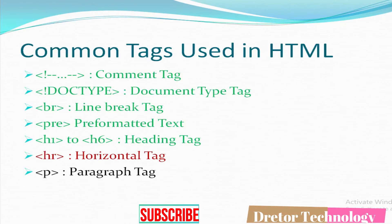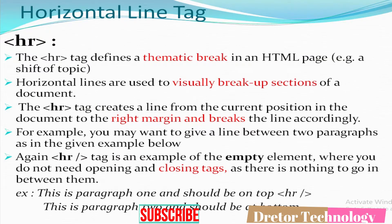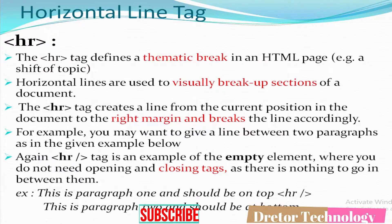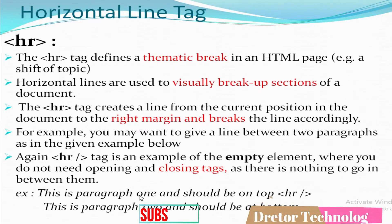The next tag is the horizontal line or HR tag. The HR tag defines a thematic break in an HTML page. It creates a line from the current position in the document to the right margin and breaks the line accordingly. You might use it to draw a line between two paragraphs. The HR tag is an empty element — a singular tag with no opening and closing pair. It has attributes such as class.